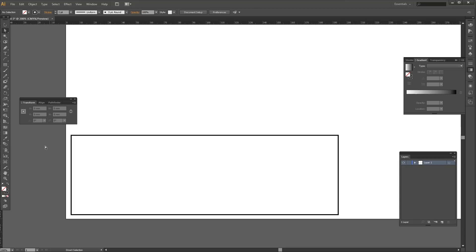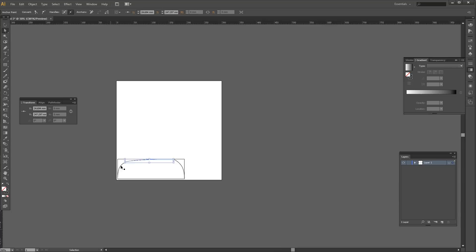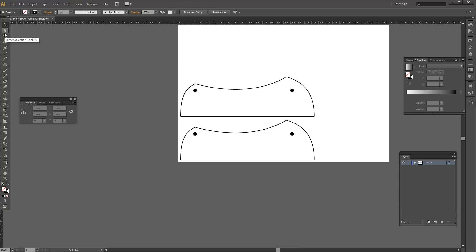I started off with some rough dimensions of a Krenov style plane I found online and put this into Illustrator. Once I had all the basic components sketched out, I took some time to refine the curves to get the shape I like the look of.